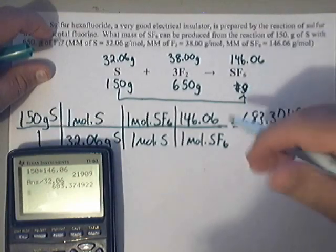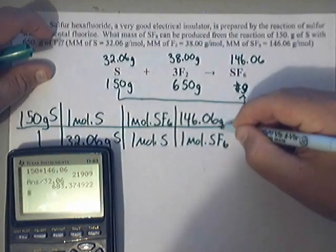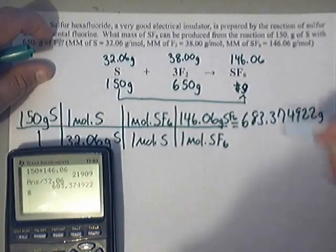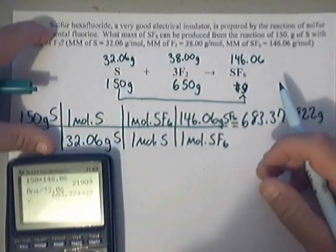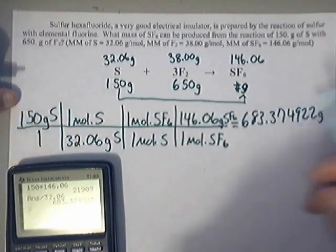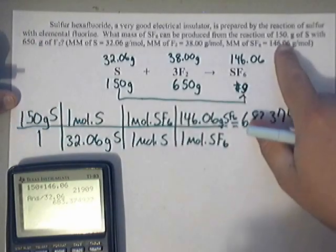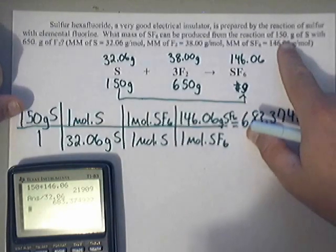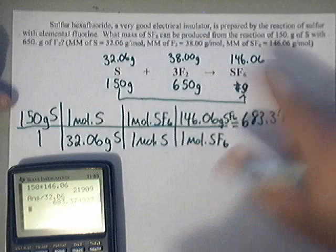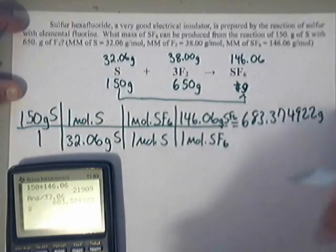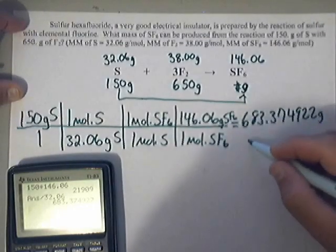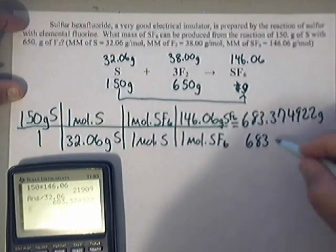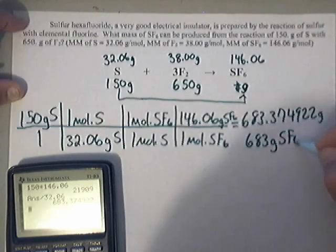Now I do not need all of that for my answer. What I need to do though is get the number of sig figs. I need three sig figs. I need three sig figs for this calculation. Because the creator of the problem wrote down 150 point. I'm pretty sure they intended for all purposes for us to use three sig figs. So that's what I'm going to do here. So this is 683 grams of SF6.